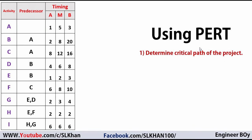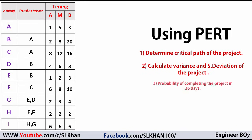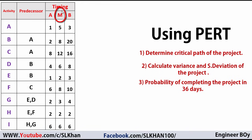Alright guys, so this time I'm gonna be quick and straightforward and I'm gonna use PERT, which is known as Program Evaluation and Review Technique, also known as PRT. We're gonna calculate and analyze the critical path of the project using PERT, then calculate the variances and standard deviation of the project. We have three types of times: optimistic, most likely, and pessimistic. We're gonna analyze this project using these three types of times, and here we have the activities and their predecessors.